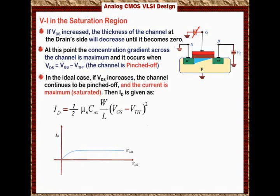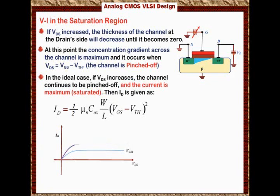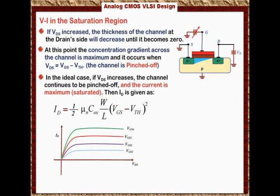Now let us select another Vgs that is bigger than Vgs1 and vary Vds. The current will be higher because Vgs is bigger — the channel is stronger, meaning lower resistivity. For the same Vds, we get higher current in the triode region until we reach saturation, where the current stays flat. You start to see a higher current for higher Vgs. If we increase Vgs a third or fourth time, we get the same pattern. This is the voltage-current relationship graphically for different Vgs values. Here is the triode region — it is linear — and here is the saturation region.